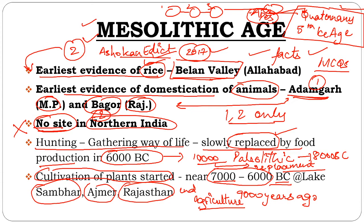Rajasthan had fertile soils — in fact, the Thar Desert soils are fairly fertile. The only deficiency is clay, which means water cannot be retained. Water evaporates quickly. Despite this, during Mesolithic times, plantation and crop cultivation had begun in that region.